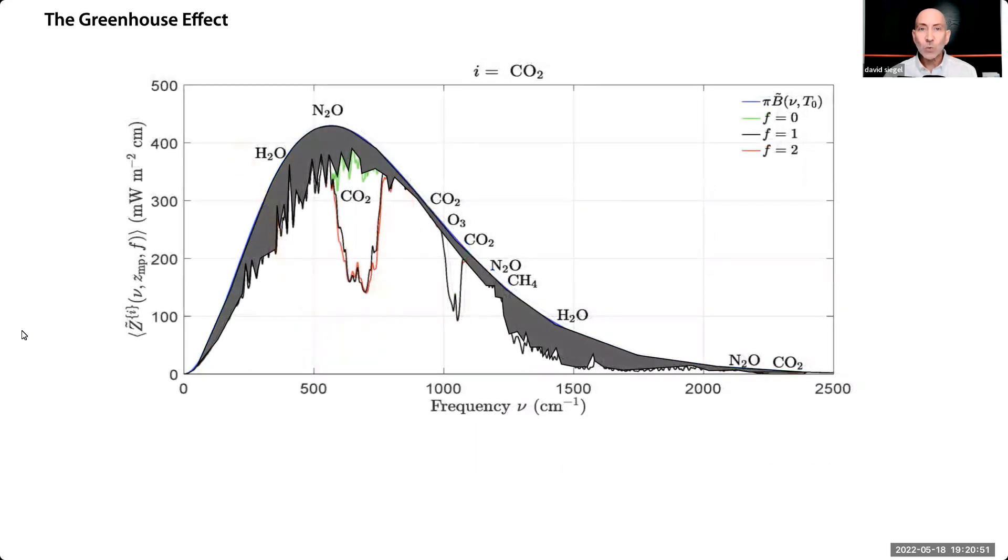So the first thing I'll add is water vapor. Here's how much outgoing long-wave radiation water vapor intercepts. Water vapor adds around 25 degrees Celsius to the equilibrium temperature, so water vapor really does a lot of work.